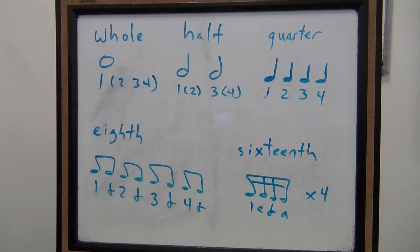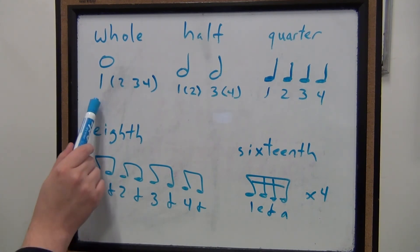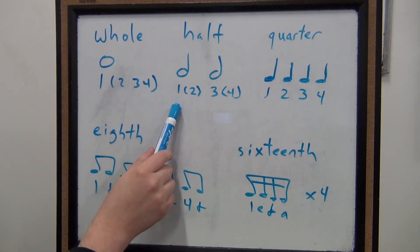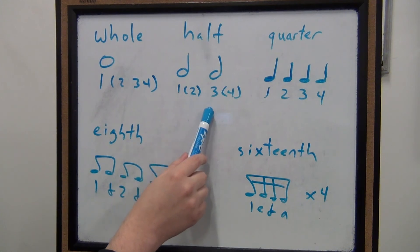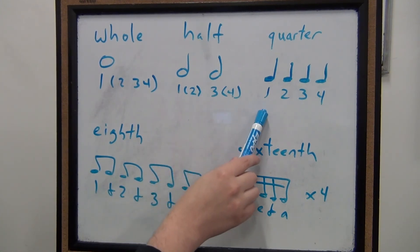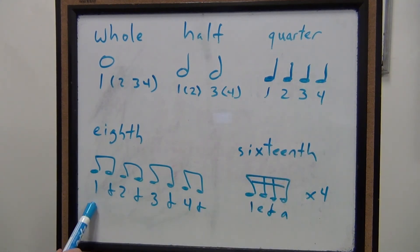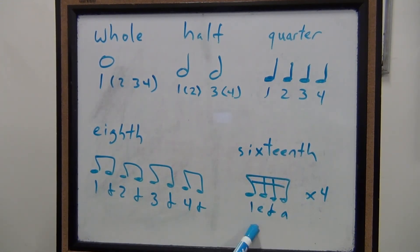Let's try all those in a row. One — then one, three — then one, two, three, four — then one and a, two and three and four and, then one e and a, two e and a, three e and a, four e and a, one.